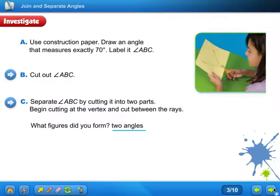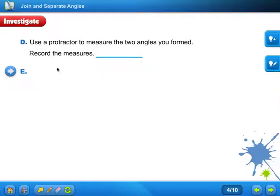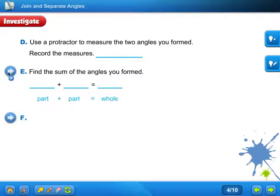Let's go to the next part. Use a protractor to measure the angles you formed. Record the measures. Find the sum of the angles you formed. So if you cut straight up the middle, an example, you may have 35 degrees and 35 degrees could be something, and it equals 70.